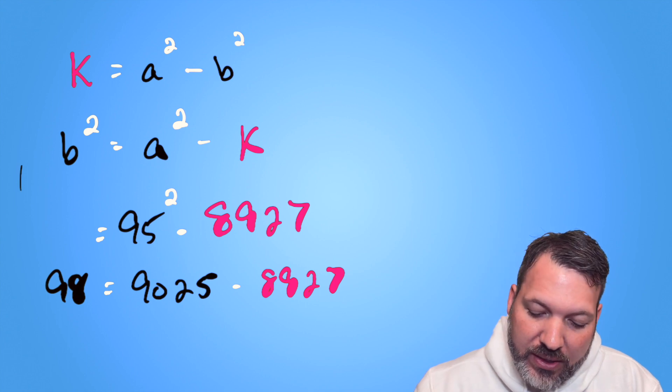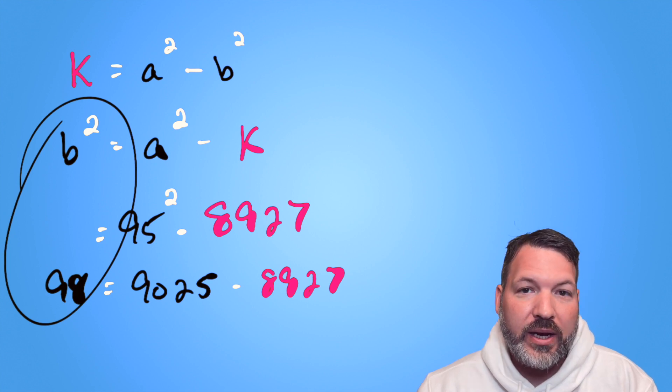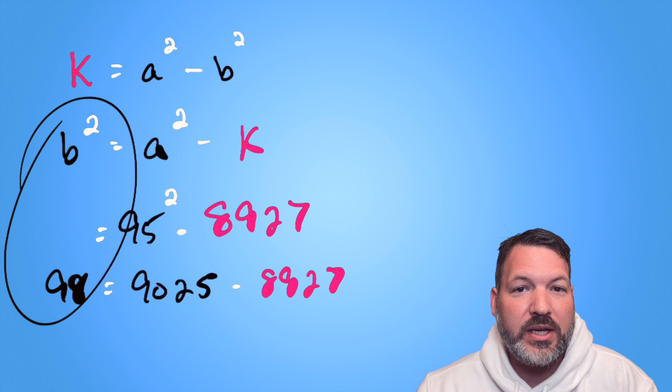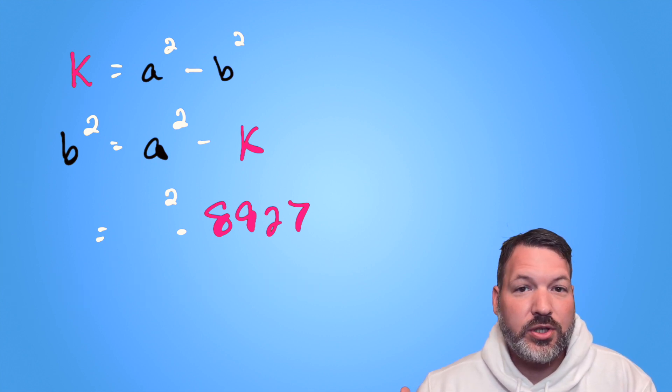Now that's a problem for us because 98 is not some integer squared. And so in this particular case, letting a equal 95 doesn't help us find a factorization of 8,927. But that's no problem for the algorithm. The algorithm says, well, let's just go one higher. Let's try out 96 squared instead.